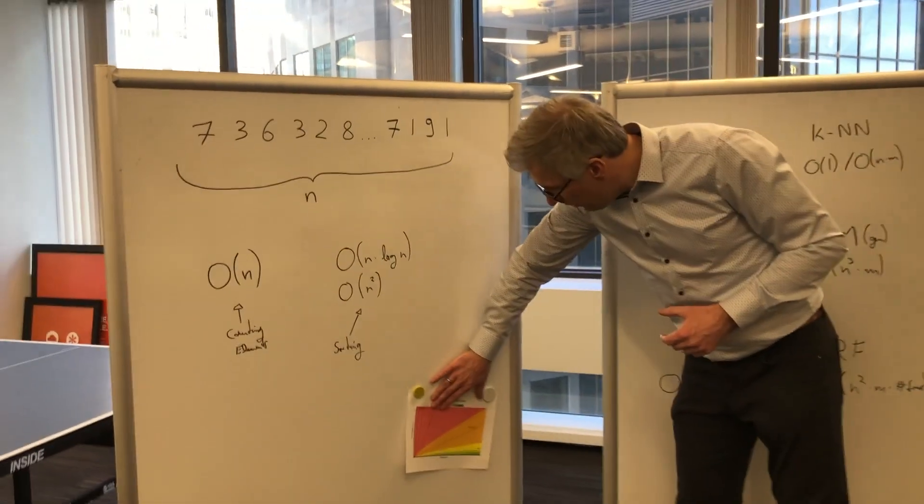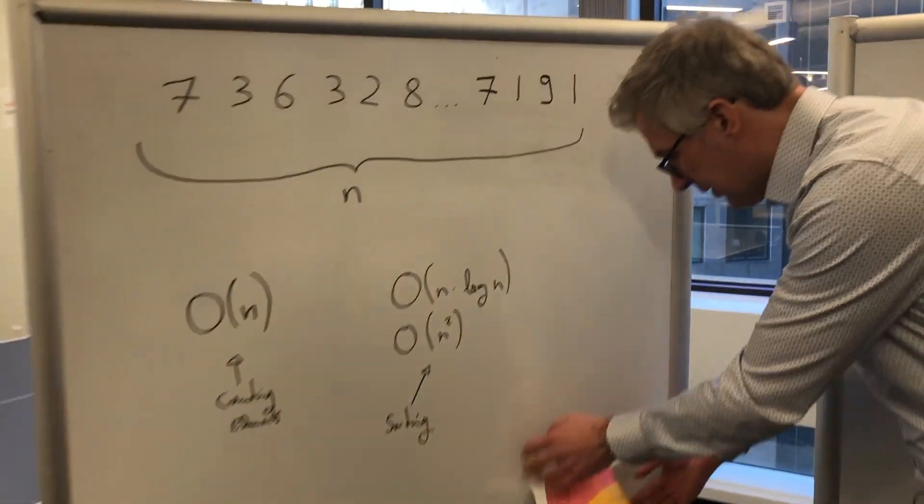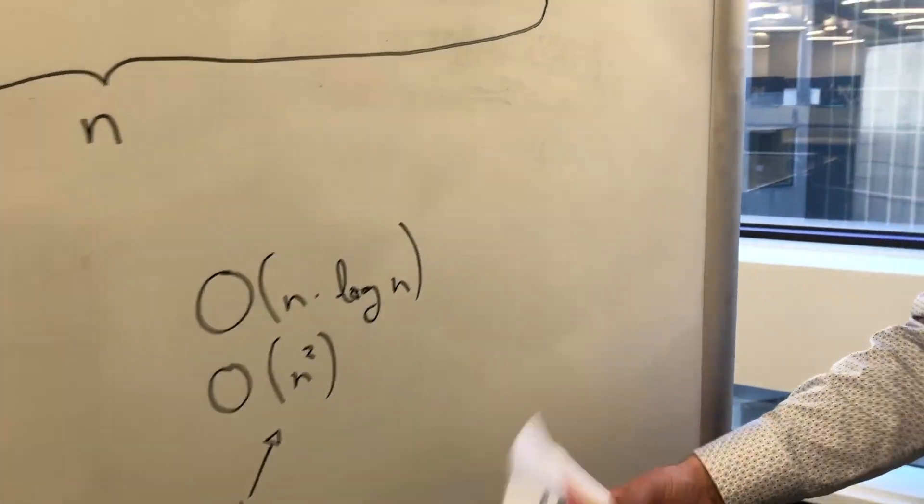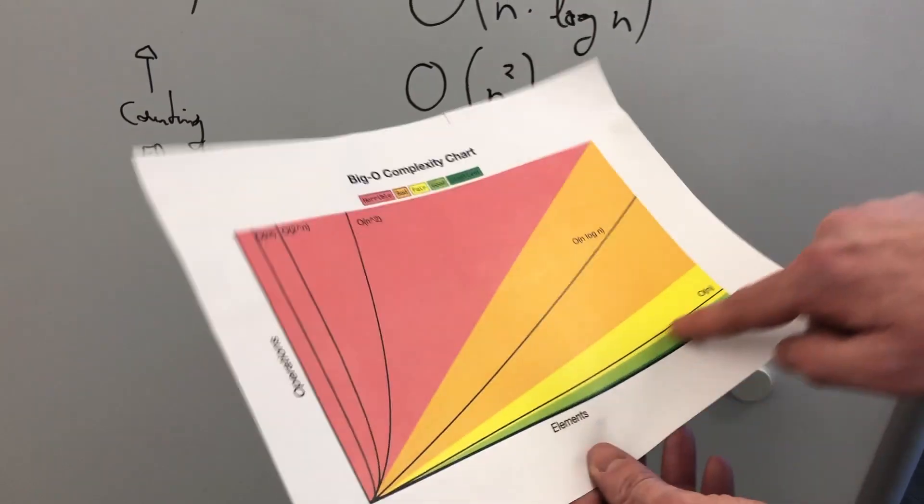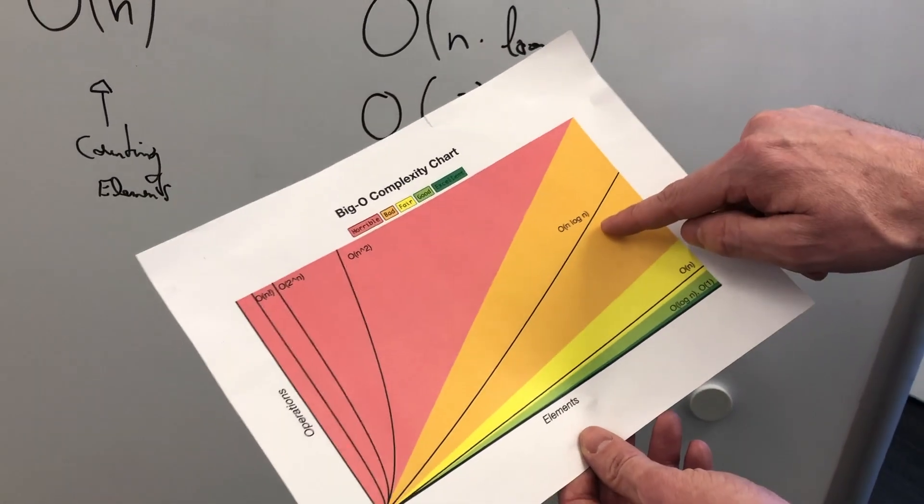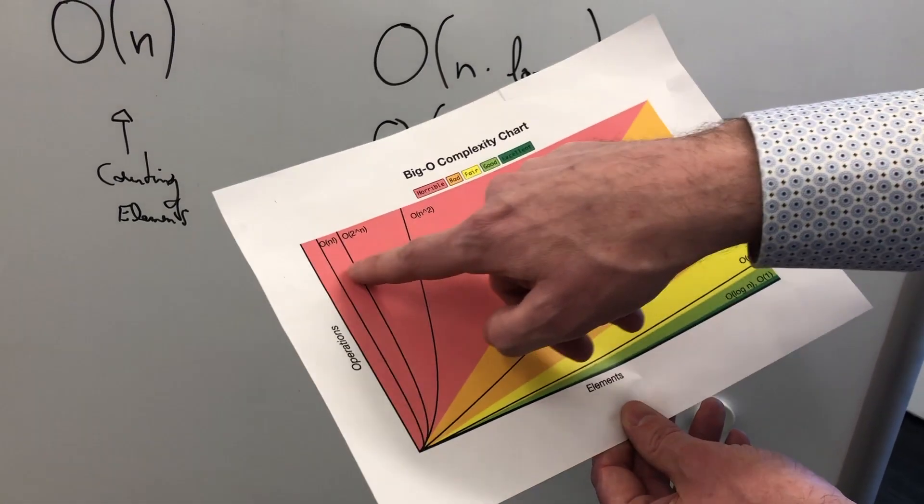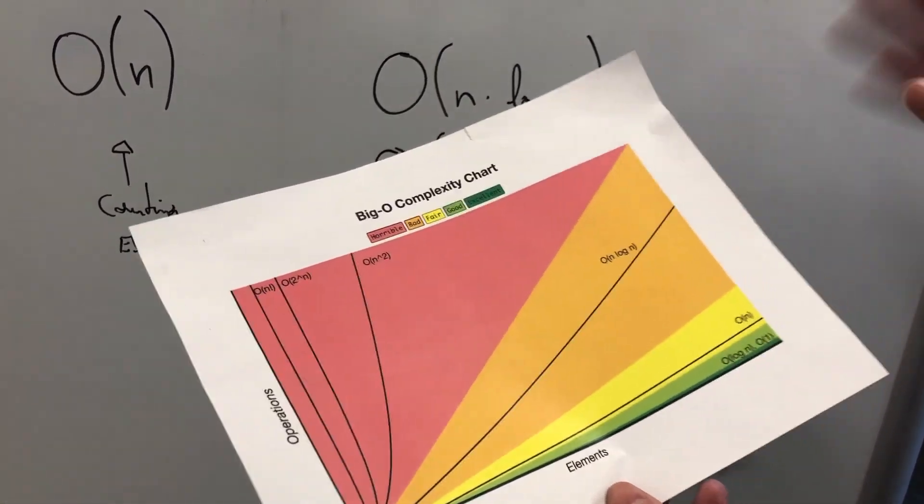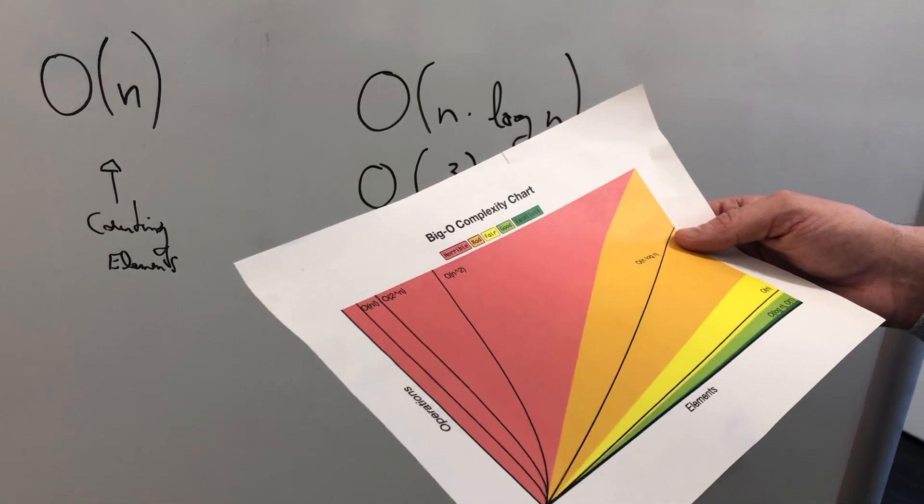If you want to learn more, there are charts on the web. You will find certainly more information somewhere. But you can really see this would be a linear time that, in general, is considered good. N log N, like most sorting algorithms, are good as well. But then quadratic or even exponential runtimes are really getting crazy.